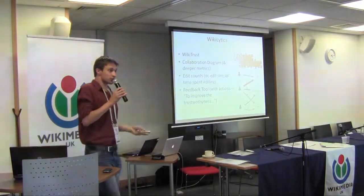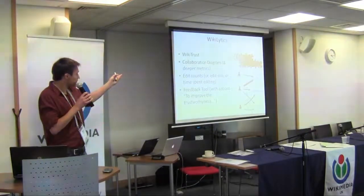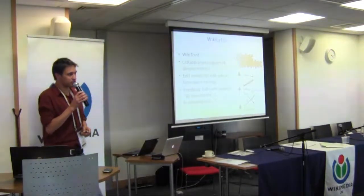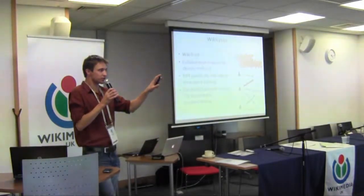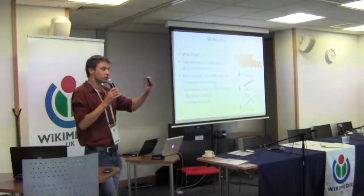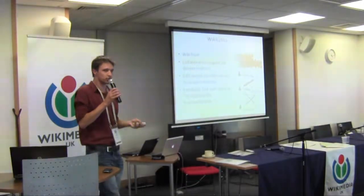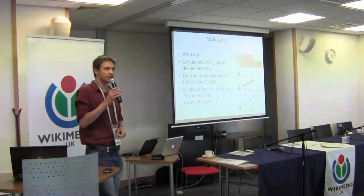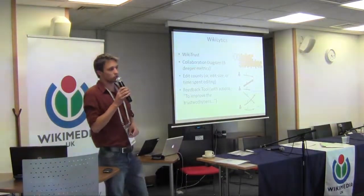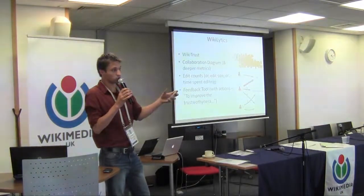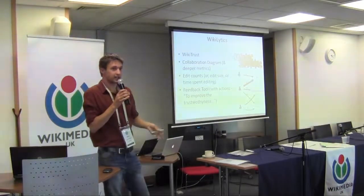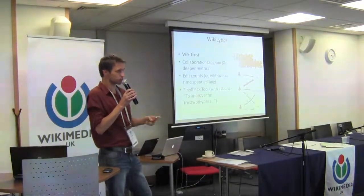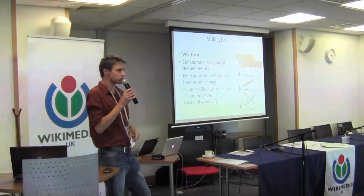There are some nice examples of these tools. WikiTrust is a MediaWiki extension that marks up Wikipedia — or MediaWiki — pages for the longevity of edits and gives people a kind of trust rating. It's a useful mechanism for understanding how stable the page is, so rather than looking at the individual user, you're looking at page quality. You can obviously also take things like edit counts, time spent editing, and size of edit, and there are some interesting differences between those.